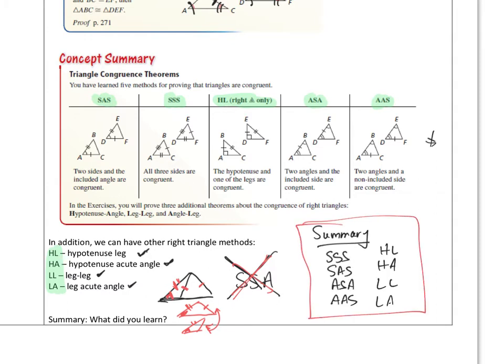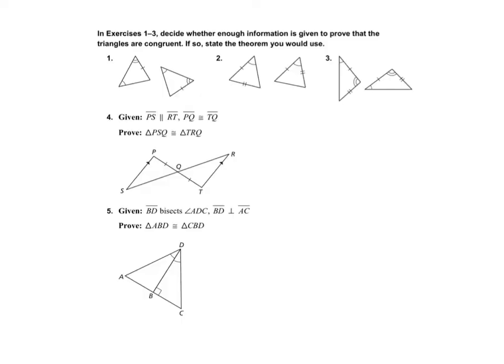Let's do a few examples. Decide whether enough information is given to prove that the triangles are congruent, and if so, state which theorem you would use. Over here, this angle is congruent to that one, and then another angle, and then the side. So: angle, angle, then a side — angle, angle, then a side. Yes, and it's by angle-angle-side.